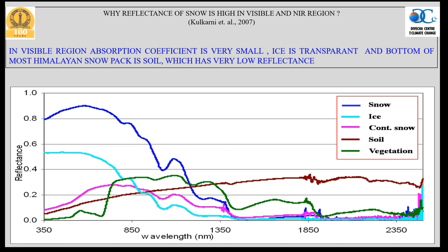The reflectance curve of ice follows the same shape as snow but with reduced magnitude — dark blue representing snow and light blue representing ice. The relative characteristics remain the same: high reflectance in the visible range and low in the shortwave infrared, but the overall albedo of ice is lower than that of fresh snow.